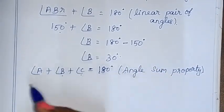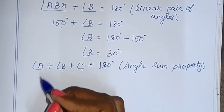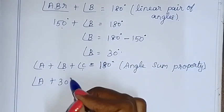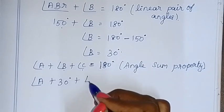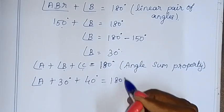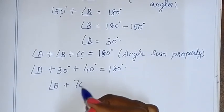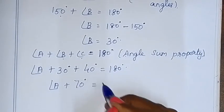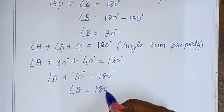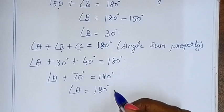So Angle A, Angle B is equal to 30 degrees, plus Angle C is equal to 40 degrees. This is equal to 180 degrees. Now Angle A plus 70 degrees is equal to 180 degrees. So Angle A is equal to 180 degrees minus 70 degrees, which is equal to 110 degrees.